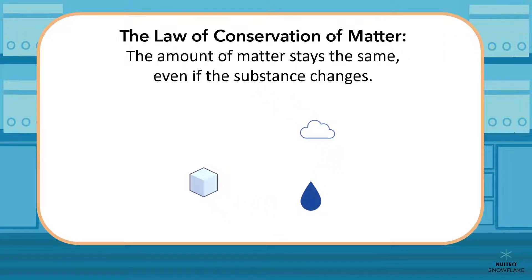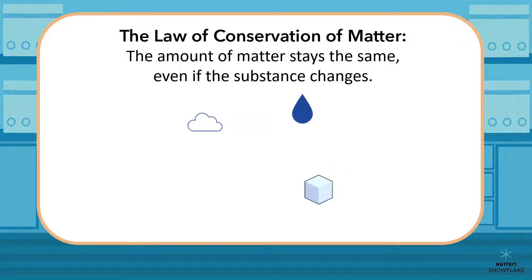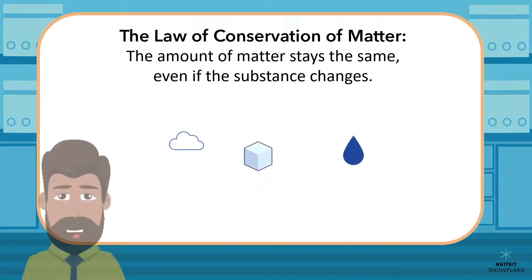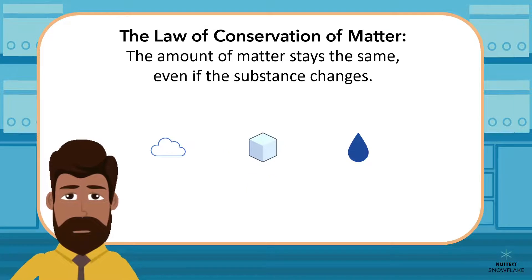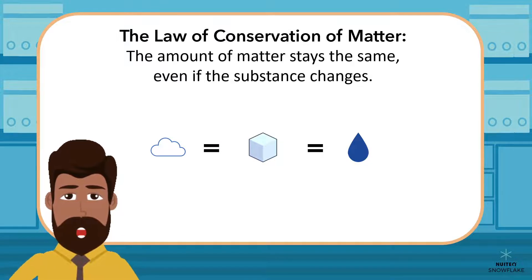There is a rule called the law of conservation of matter. This law states that the amount of matter stays the same even if the substance changes. What that means is that when matter changes from one form to another, the amount still stays the same. Matter cannot just appear or disappear. It is always there. The form of the matter changes, but the amount will be the same. It will never just vanish.